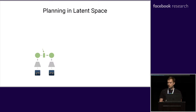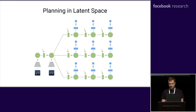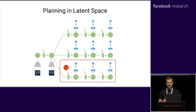Now that we have the model, we want to select actions. For this, we first encode the past observations of the sequence to get the current state. From this state, we can predict forward for different action sequences, and then predict the rewards to select the best action sequence. We then execute the first action of this plan. At the next step, the agent receives a new input and so we re-plan.